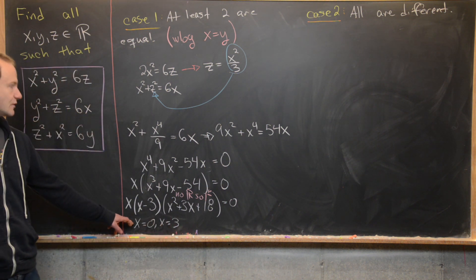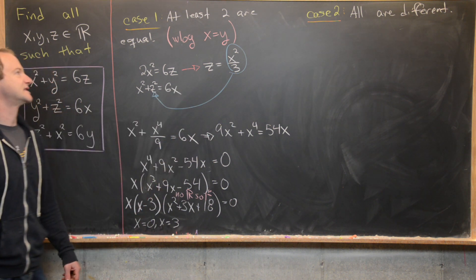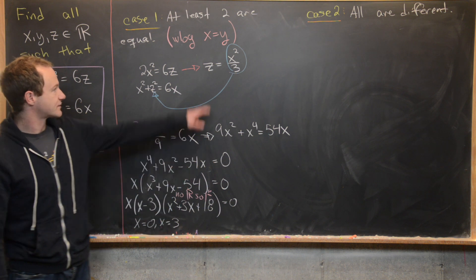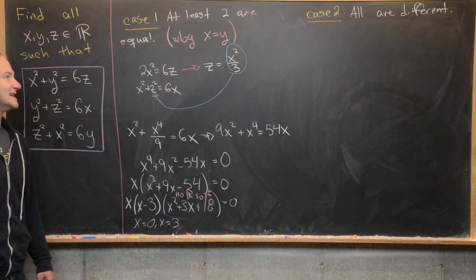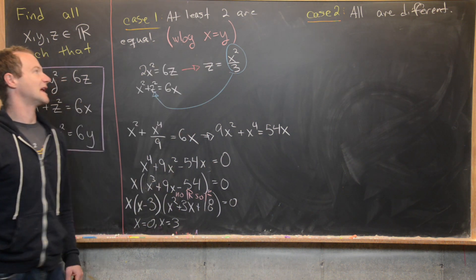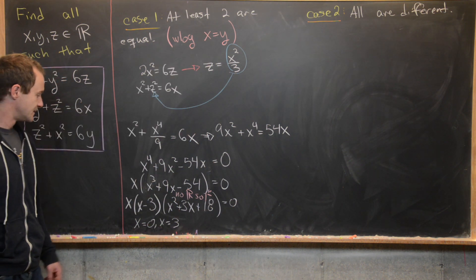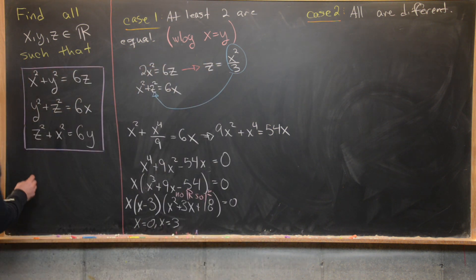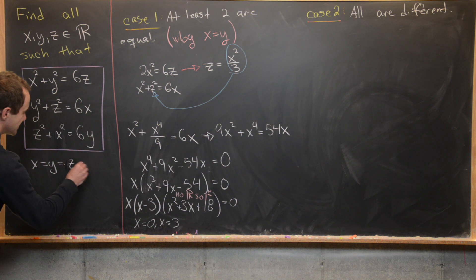Now if we plug x = 0 back up here, we'll see that z = 0. If we plug x = 3 back up here, we'll see that z is also equal to 3. But we assumed that x was equal to y, so that gives us two solutions to start with. We've got the solution x = y = z = 0, and x = y = z = 3.